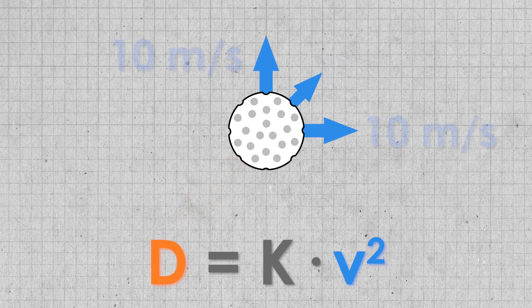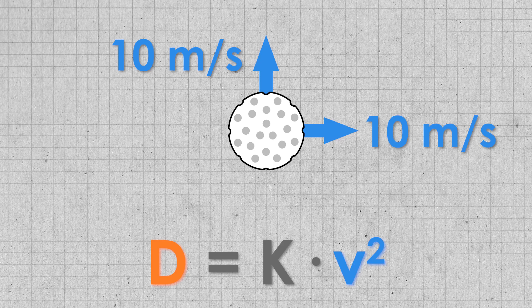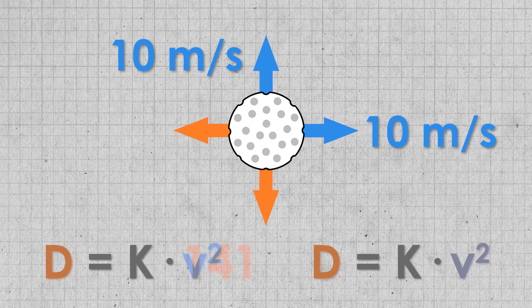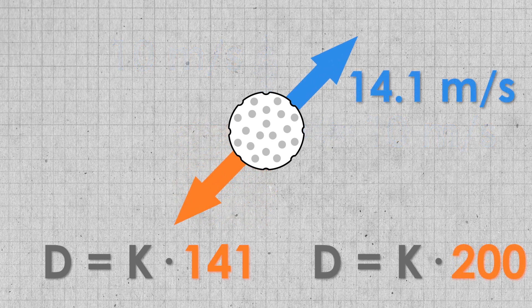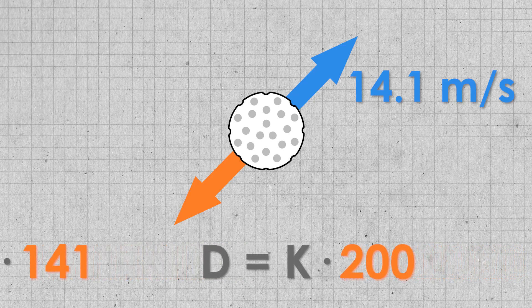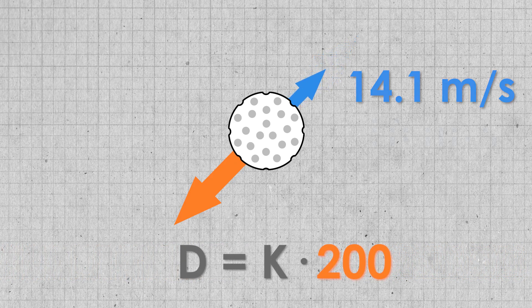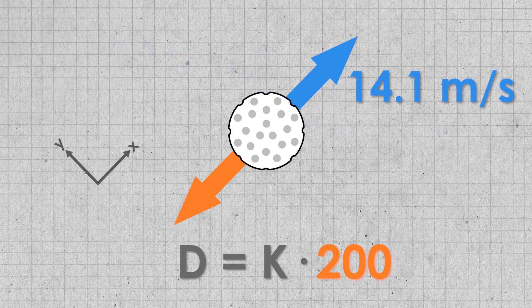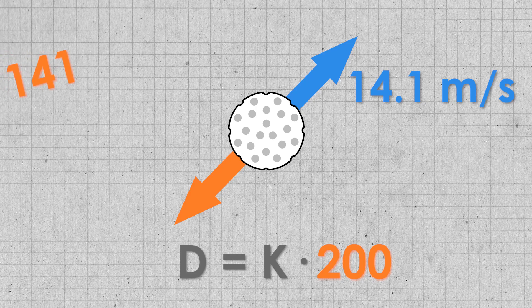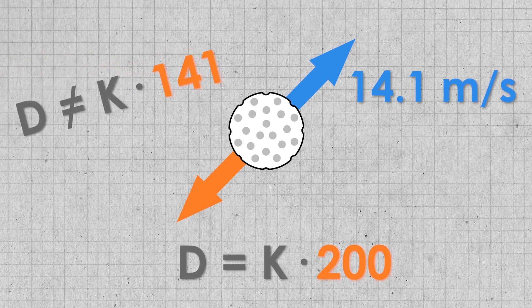If we use a velocity of 10 meters per second in both directions, for example, the first method gives us 141.42 something times our constant, but the second method gives us 200 times our constant. We know that that second method is correct because it's the same as rotating our coordinate frame to match the velocity vector and turning this into a one-dimensional problem. So the real question is, why does the component method give us less drag?